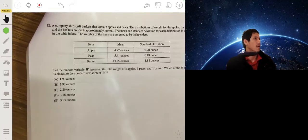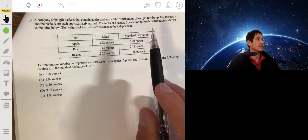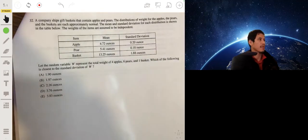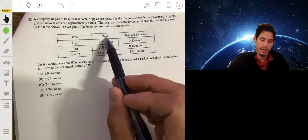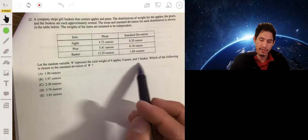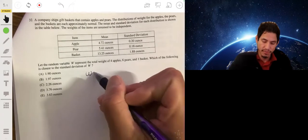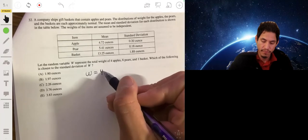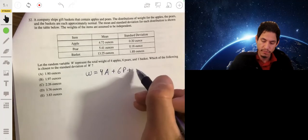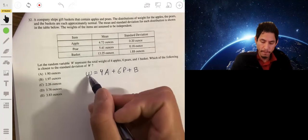Alright, number 32. The company ships gift baskets that contain pears and apples. The distributions of weight for the apples, the pears, and the baskets are approximately normal. The means and standard deviations for the distributions are shown in the table below. The weights are assumed to be independent. Let W represent the total weight of four apples, six pears, and one basket. What is closest to the standard deviation of W? So let's have W be equal to 4A for apples plus 6P for pears plus 1B or just B for basket.